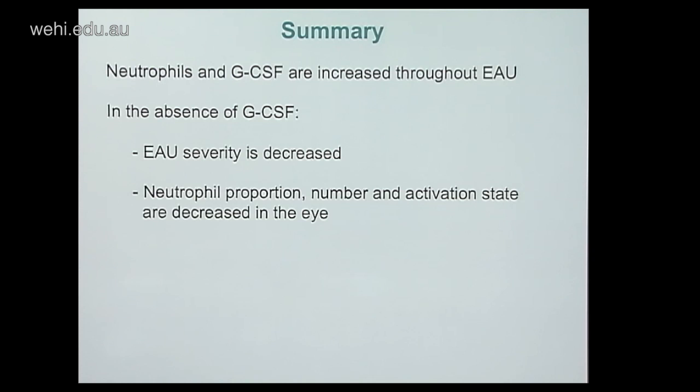In summary of this first section: neutrophils and GCSF are increased throughout the course of EAU. In the absence of GCSF, we see a decrease in the severity of disease and a decrease in neutrophil proportion, number, and activation state.